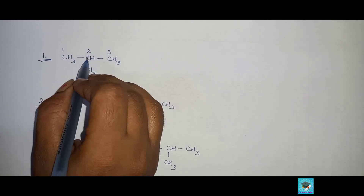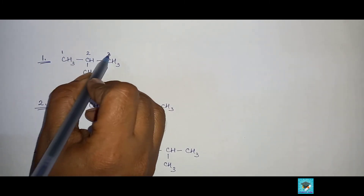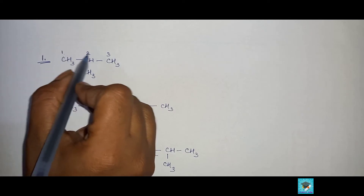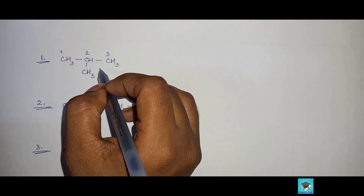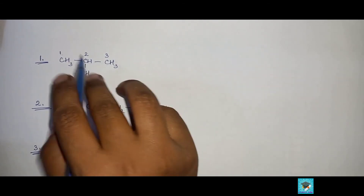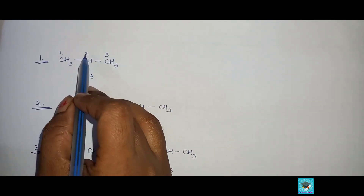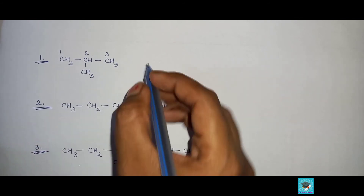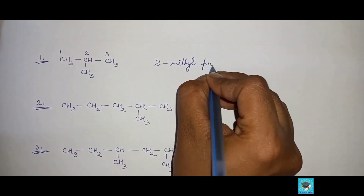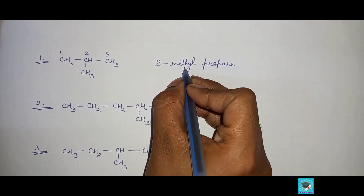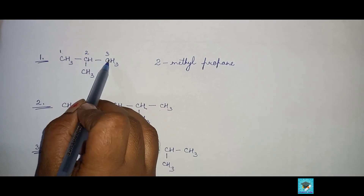The first example is CH3–CH–CH3 with one alkyl group attached to the chain. The first step is to label the longest carbon chain: we label it 1, 2, and 3. Carbon number 2 is attached to the alkyl group, which is a methyl group. There are three carbon atoms, so it will be propane, but since the second carbon atom is attached to the methyl group, the name will be 2-methylpropane.